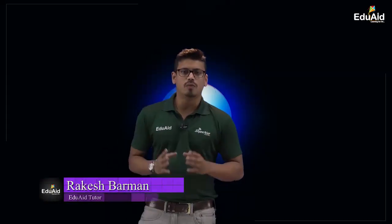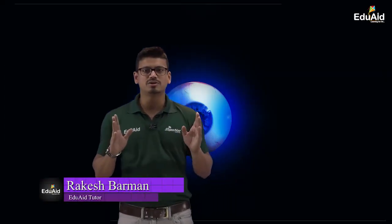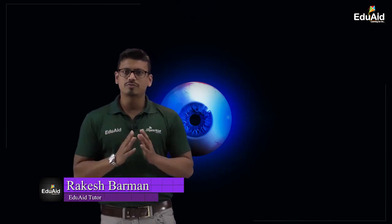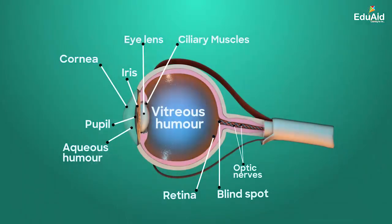Hello viewers, welcome to the summary of the chapter 'Human Eye.' We have studied about the different parts of a human eye and the role of each part.